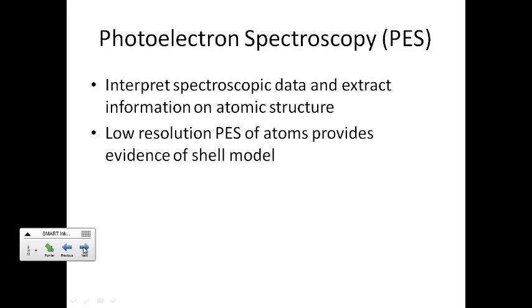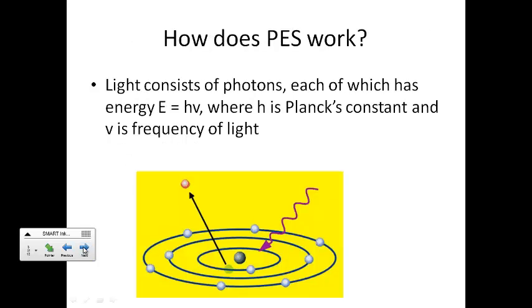Well, the answer, as you already knew, was photoelectron spectroscopy, or PES. They can interpret this data and they can determine information about the structure of the atom. This data provides evidence for the shell model of the atom.